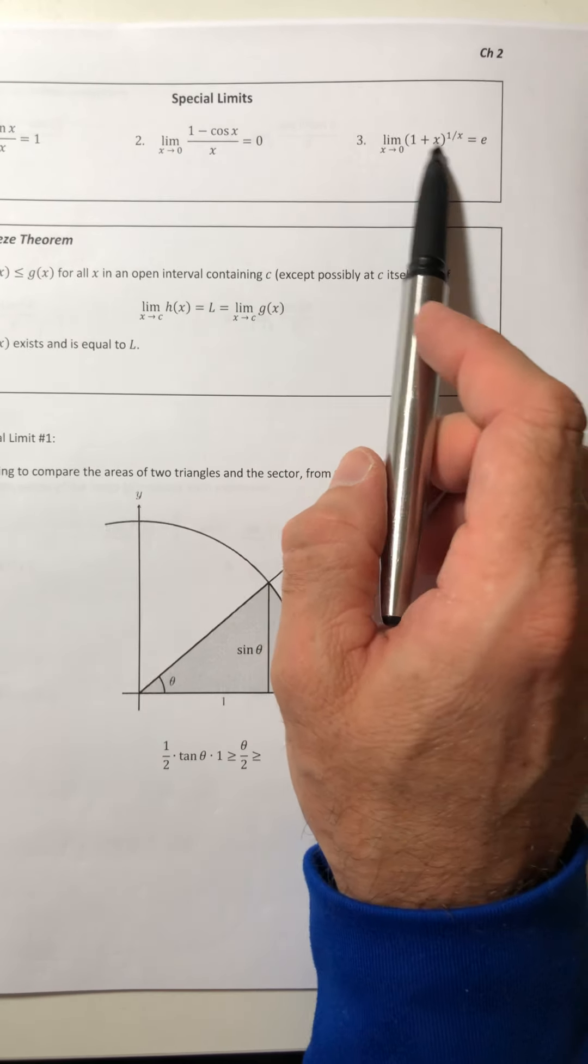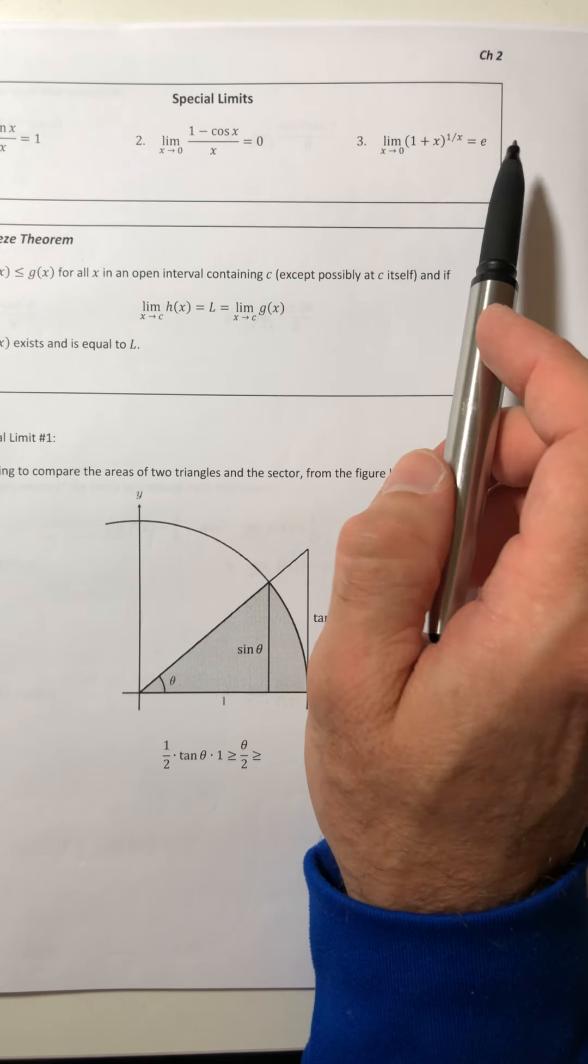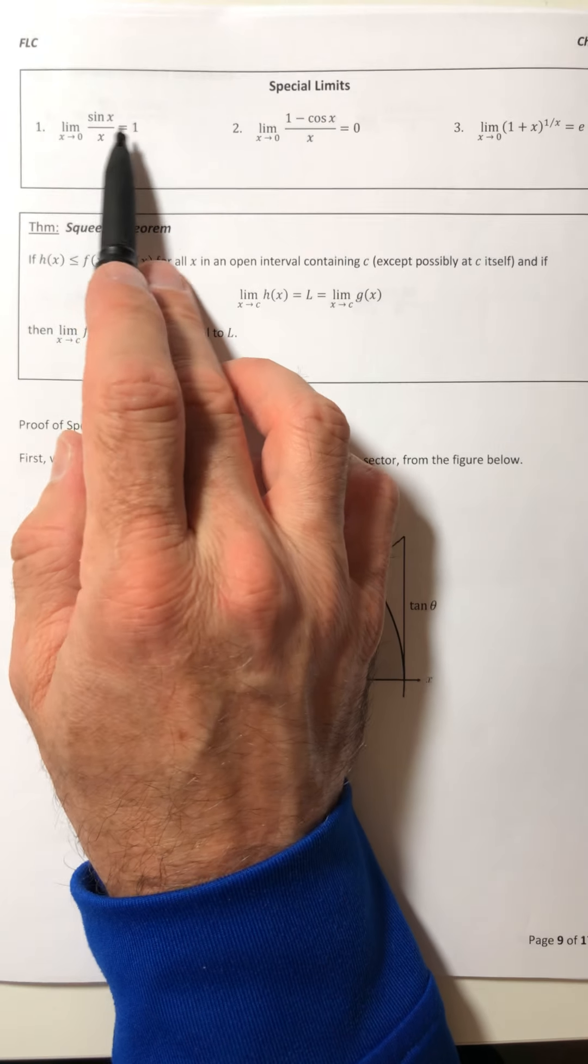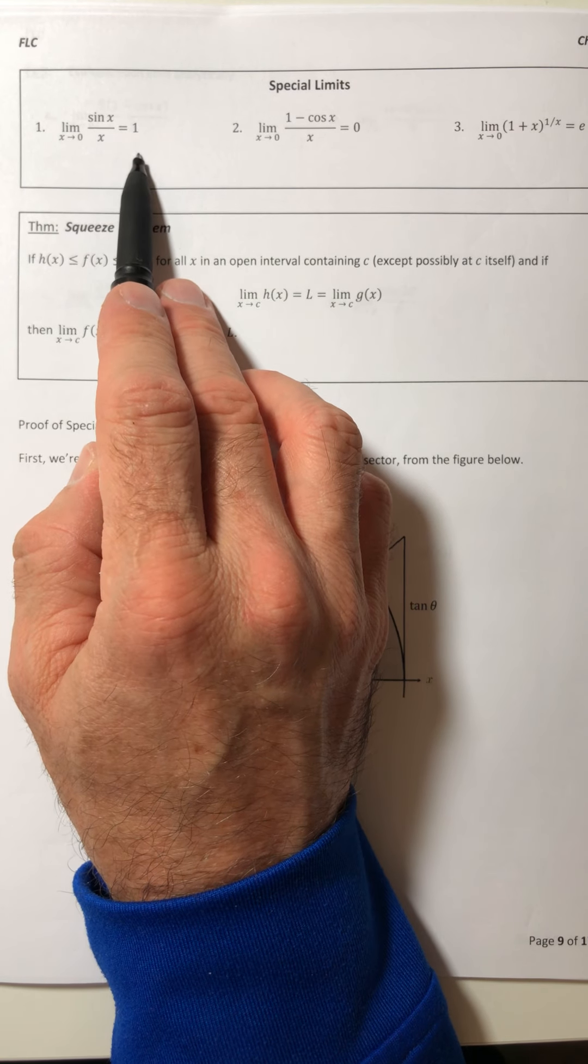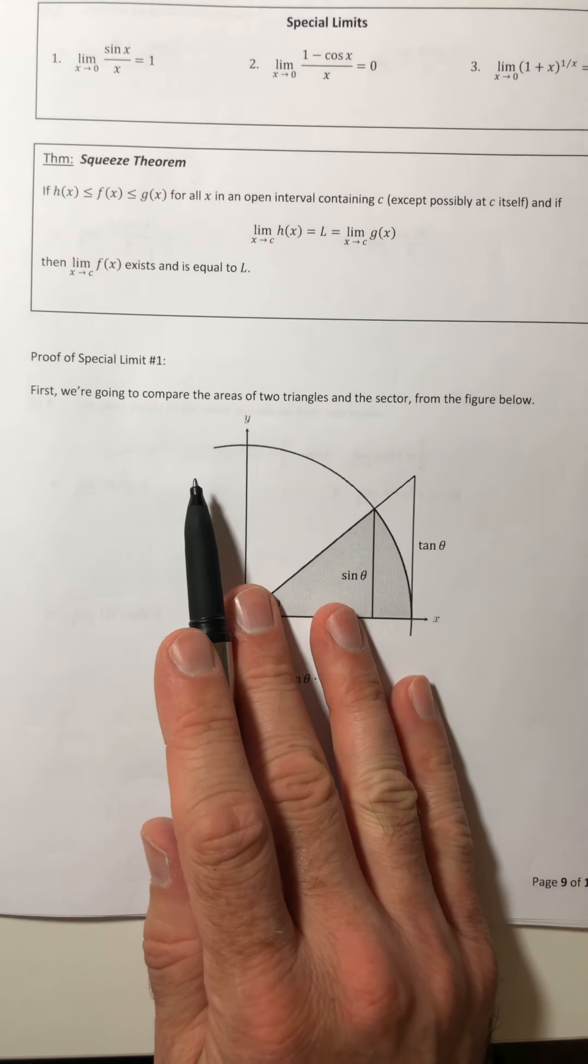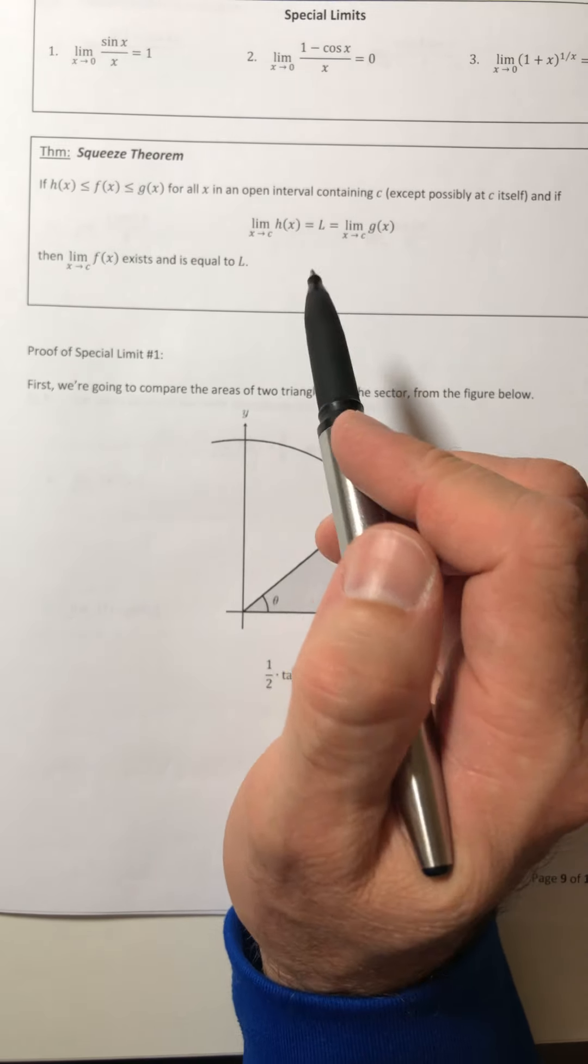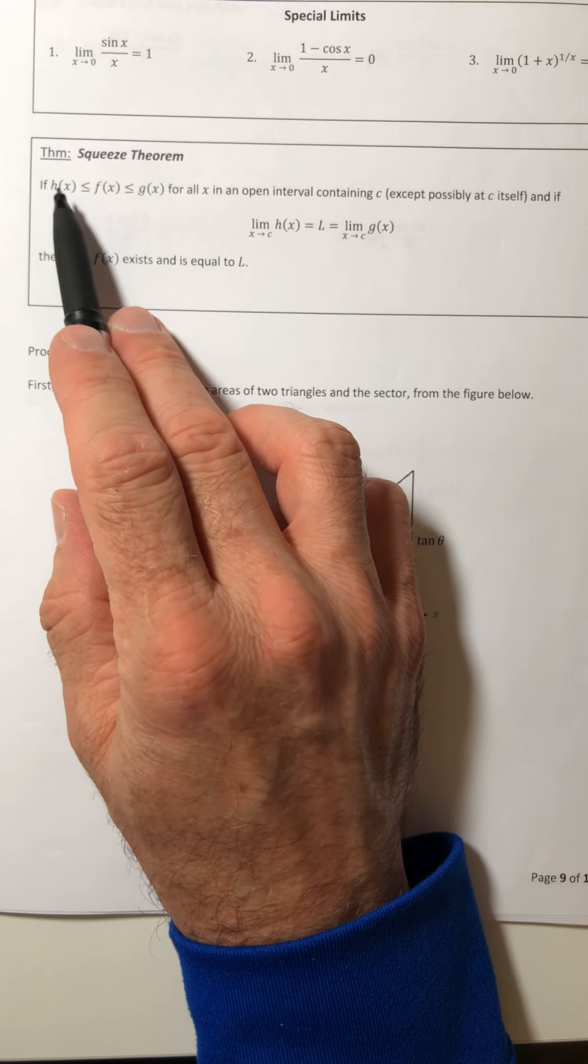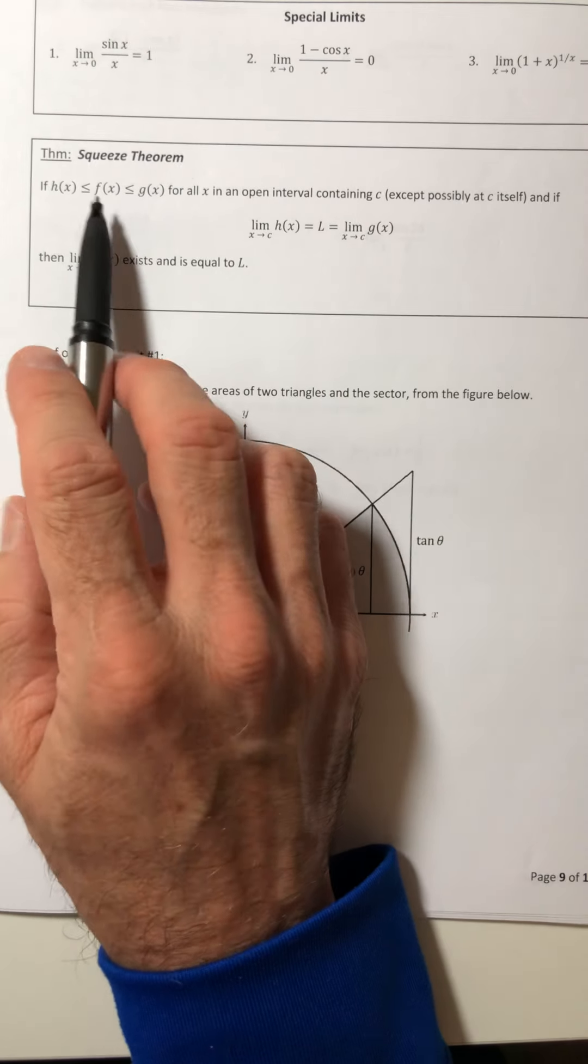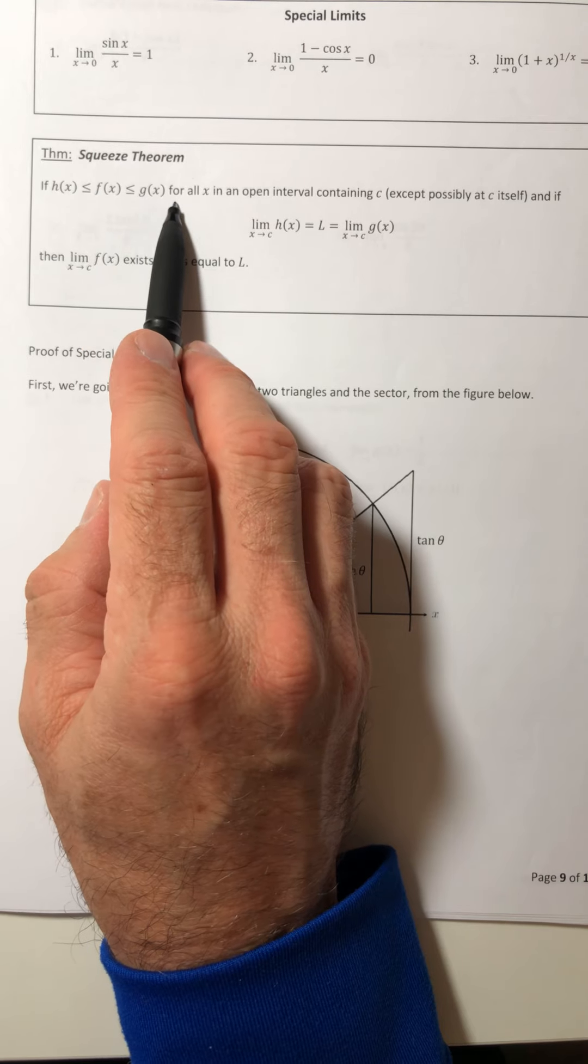The third one doesn't come up too often. You'll probably see it in a later calculus class. This limit is going to equal the number e. So we're actually going to prove this first one out, and not with the table, like actually work through it. But to do so, we're going to need what's called the squeeze theorem.